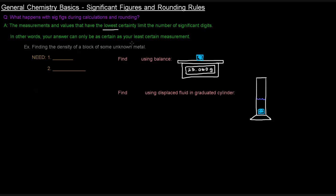Let's think about an example. Let's say you're in a lab and you need to find the density of a certain block of some unknown metal. All you need is the mass and the volume because density equals mass divided by volume. You can find the mass by using a balance, and let's say that the metal is found to be 25.060 grams — so M = 25.060 grams.